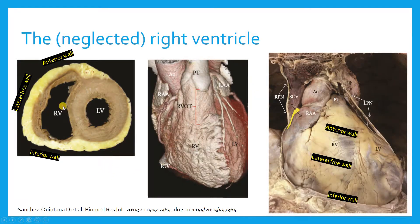Let's look at the anatomy. If you slice the RV as you would see in a short axis view — a parasternal short axis view — you can see that there are three major walls to the RV, besides the septum. There's the anterior wall, the lateral free wall, and the inferior wall.